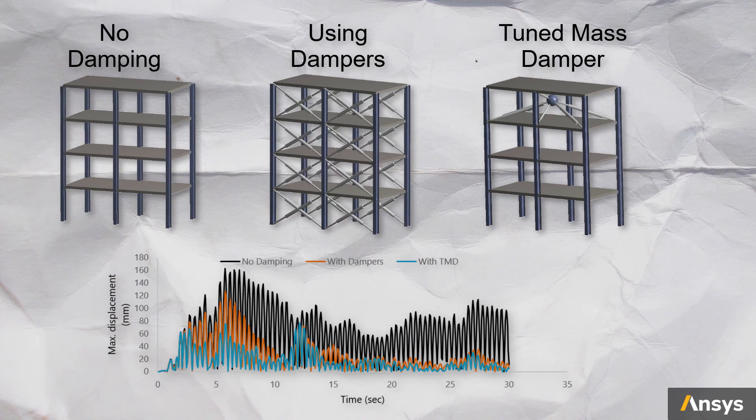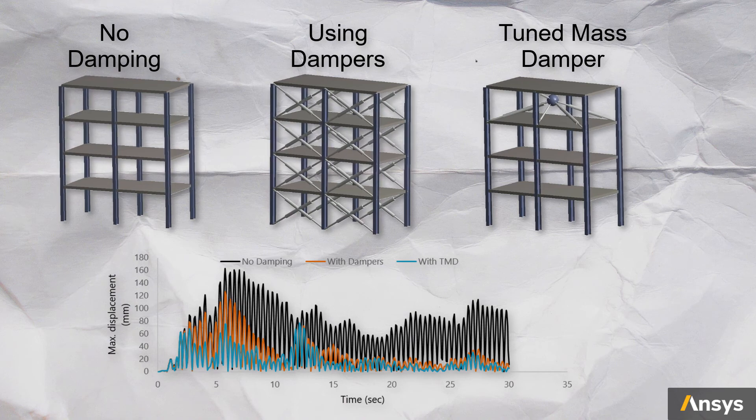Now let's perform the same transient analysis on these two structures and compare the displacement response against the undamped structure. Here are the time histories of the maximum displacement for the three systems. We can see that both structures with dampers are able to significantly reduce the maximum displacement compared to the undamped structure. The system with the tuned mass damper performs more efficiently, keeping maximum displacement lower while using fewer dampers of lower damping coefficients, showing how effective tuned mass dampers are at absorbing and dissipating kinetic energy in a controlled and timely manner.